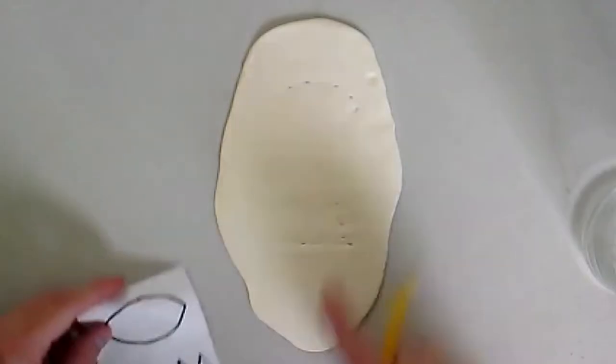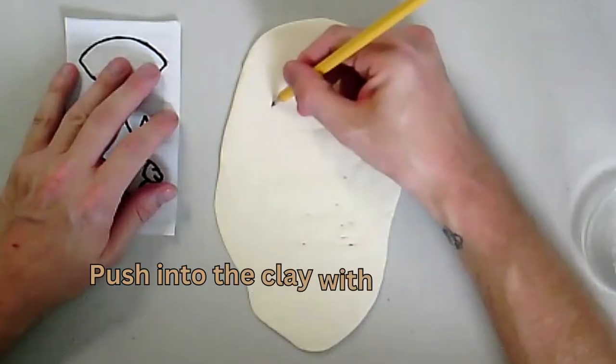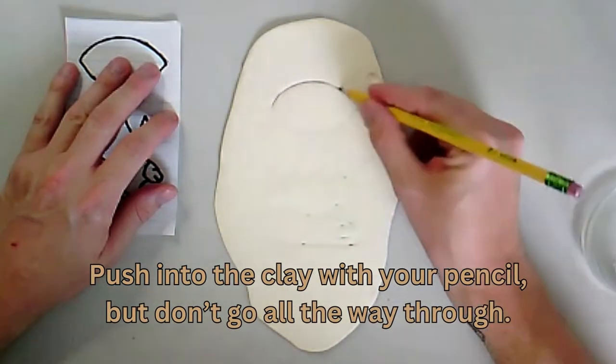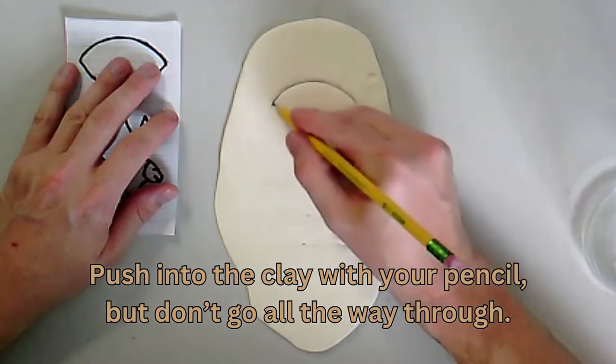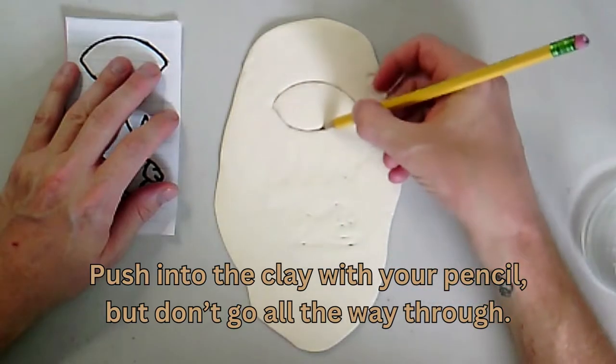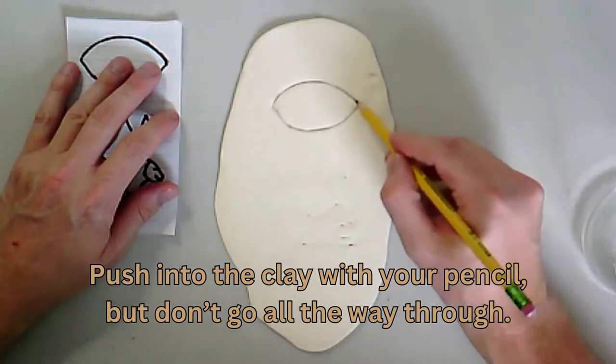Once I have it slightly on my clay, I can go back with my pencil again and I'm going to just draw over, pushing down into the clay, but not all the way through. You don't want to go all the way through your clay, but just have enough impression so that when this dries, you'll be able to see that hieroglyph. It'll look really cool.